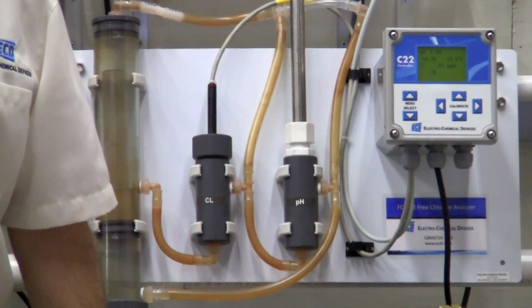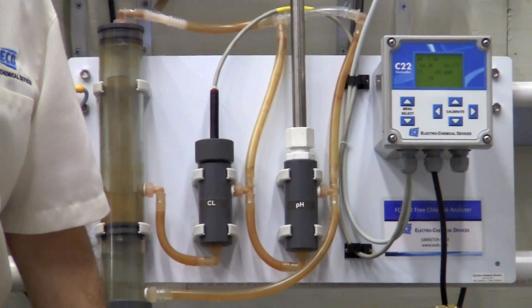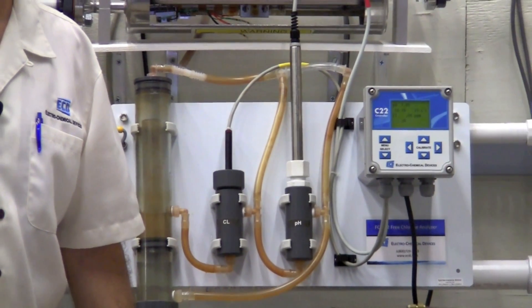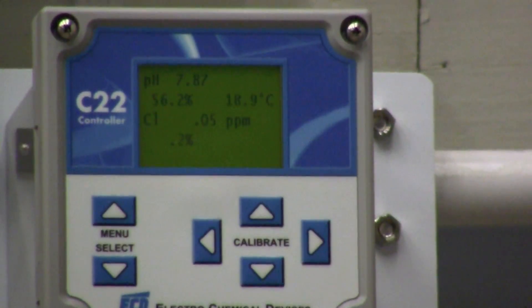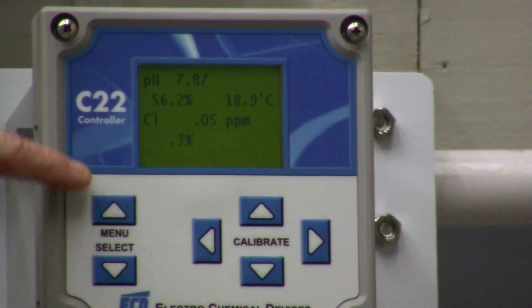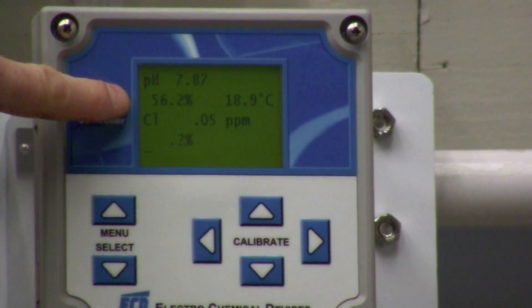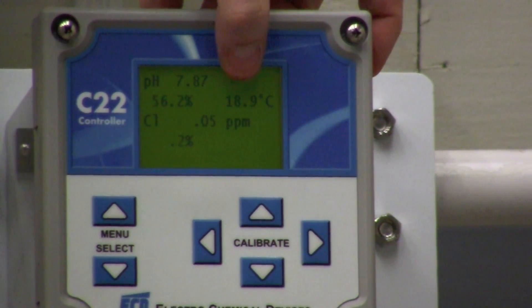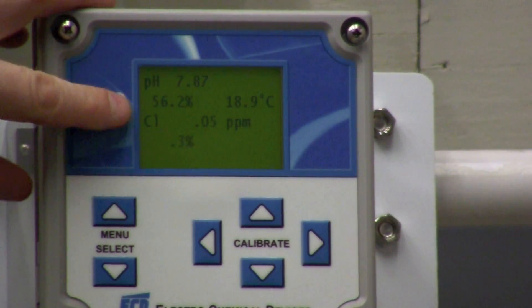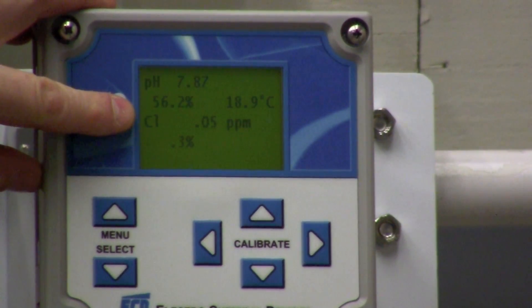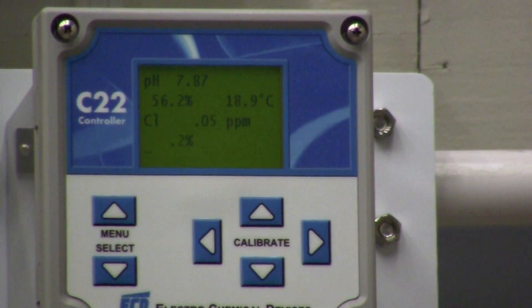The one-year kit for the chlorine sensor cost is one hundred and eighty dollars. Now that we've regenerated the chlorine sensor and the pH sensor, we're looking at a pH of 7.87, 56.2 percent of the 4 to 20 output, 18.9 degrees Celsius, and a chlorine reading of 0.05 parts per million.